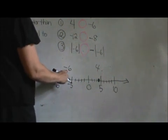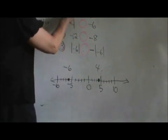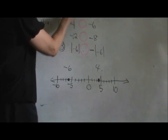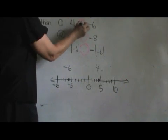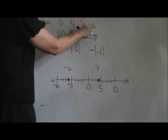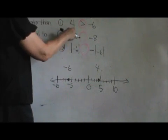When we are writing our comparison, we always want to use the small symbol pointing towards the smaller number. So that is smaller. Negative 6 is smaller than positive 4.